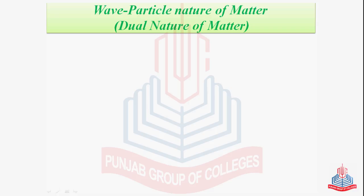First, let's talk about Planck's quantum theory. In Planck's quantum theory of radiation, it was established that light shows a dual character — which means that it can behave as a material particle as well as a wave.